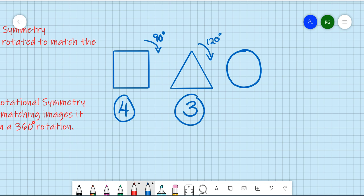And then finally, the circle. You can turn it just a tiny amount, or you can turn it a lot, but ultimately there's actually an infinite number of ways in which it has rotational symmetry.